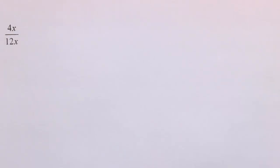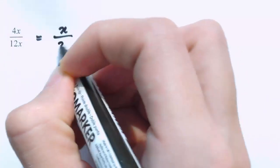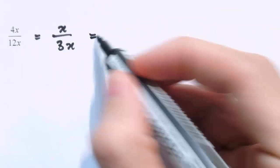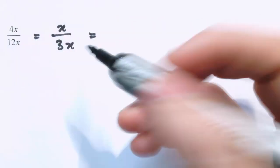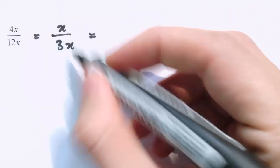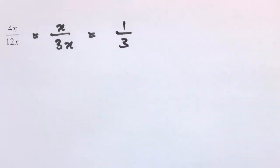So here's another example: we've got 4x over 12x. Well, here we can still divide top and bottom by 4 again. That will cancel out a factor of 4 on the top, leaving just x, and we'll leave 3x on the bottom. And we can also cancel out a factor of x top and bottom — divide top and bottom by x and get 1 third again.